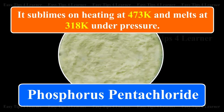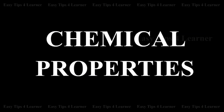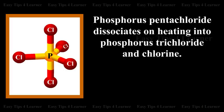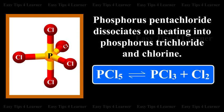Chemical Properties. Phosphorus pentachloride dissociates on heating into phosphorus trichloride and chlorine: PCl5 gives PCl3 + Cl2.